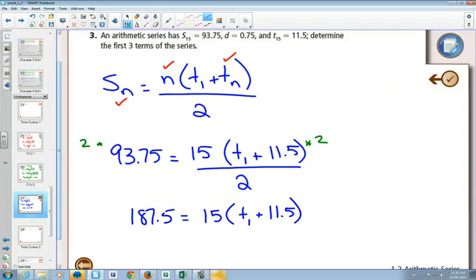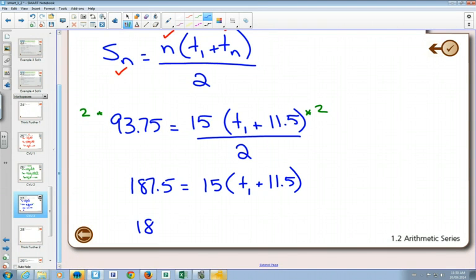What do you do with the number outside of brackets? Yeah, multiply it out, right? Or distribute. So what we could do here is we have 187.5 equals, and if I multiply this number through, 15 times 11.5 is 172.5.